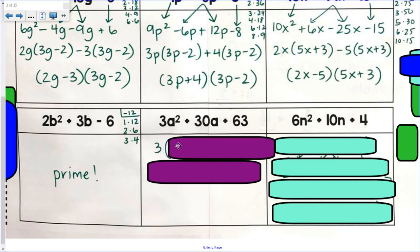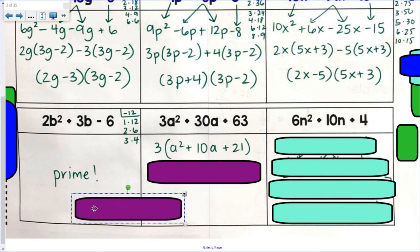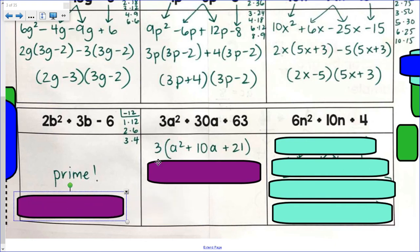So if I actually factor out a 3 right from the beginning, I'd be left with a² plus 10a plus 21. And what I'm actually left with here is a trinomial that I would be able to factor as if I factored the previous trinomials that we learned about, where the a value was just 1 in front. What factor pair multiplies to get 21 that adds up to get 10?